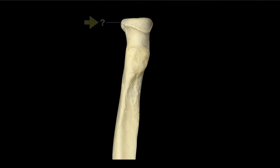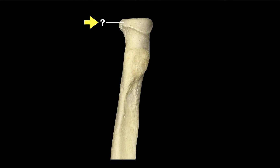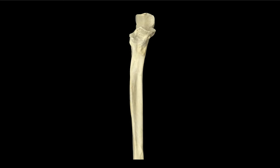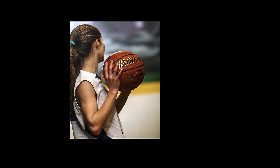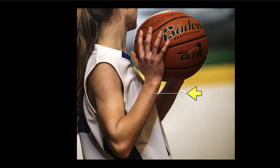What about this? That's the proximal smooth dome, round portion of the radius — that's the head of the radius, the synovial pivot joint. What about this landmark? That's the notch of the proximal ulna — that's the trochlear notch because it articulates with the trochlea of the humerus. What bone is this? It's along the pinky side, not the thumb side — so that's the ulna.